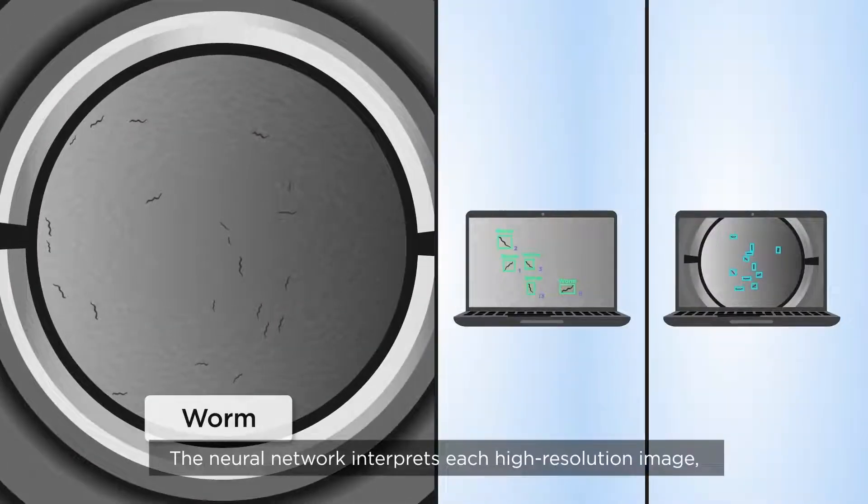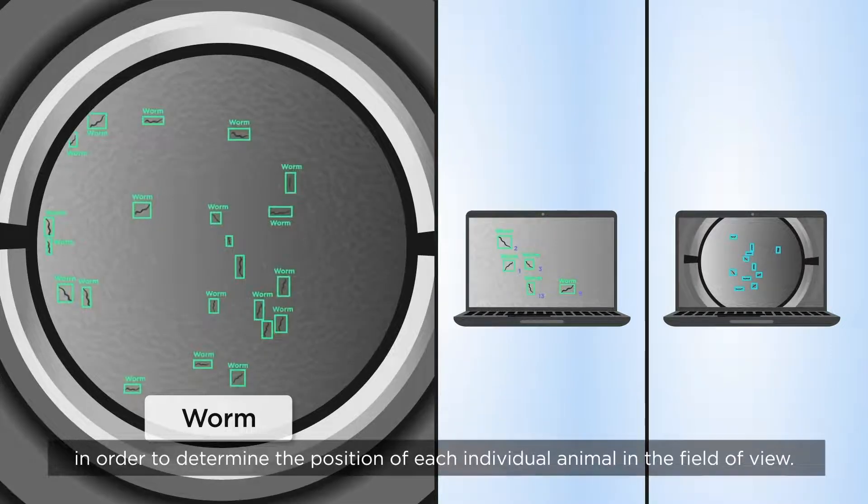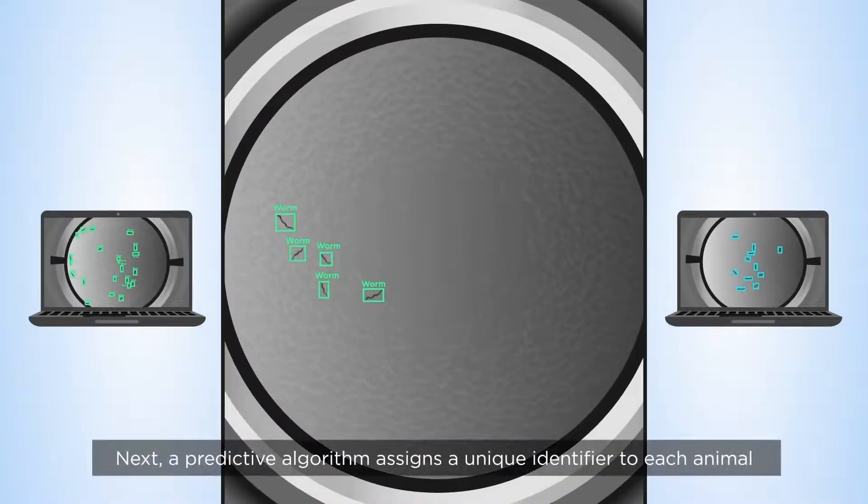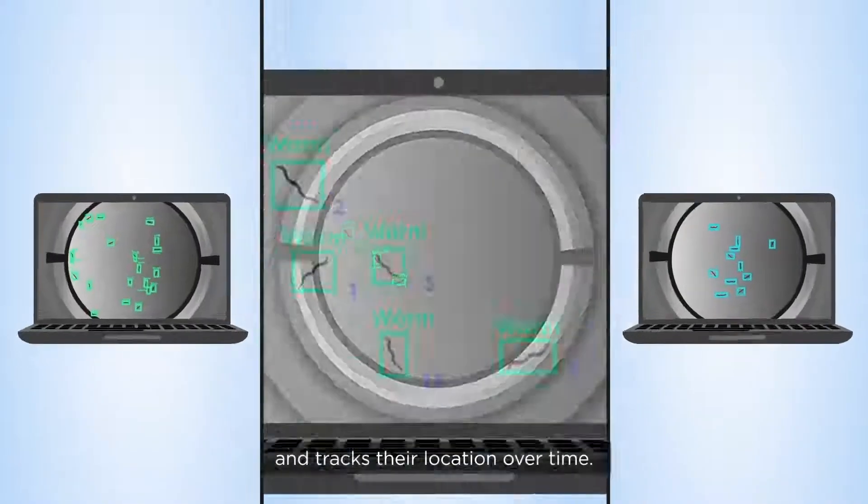The neural network interprets each high-resolution image in order to determine the position of each individual animal in the field of view. Next, a predictive algorithm assigns a unique identifier to each animal and tracks its location over time.